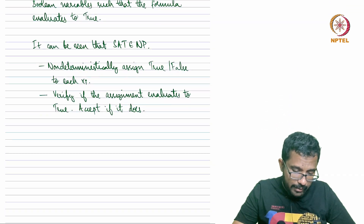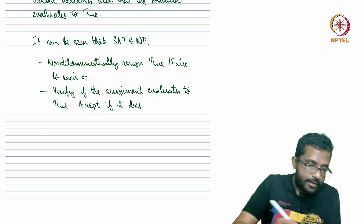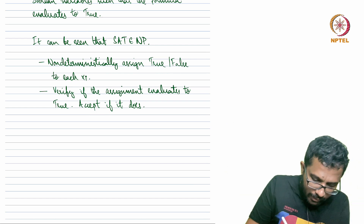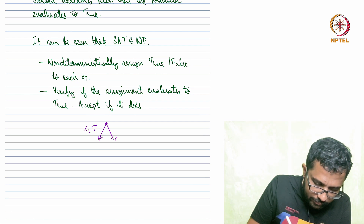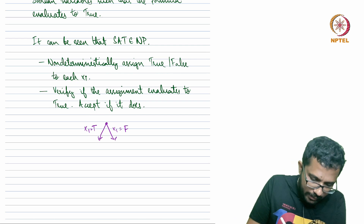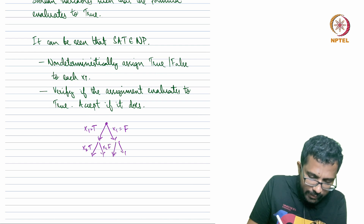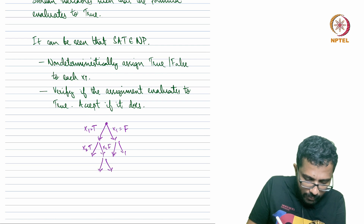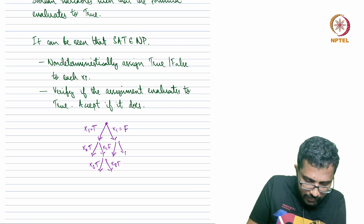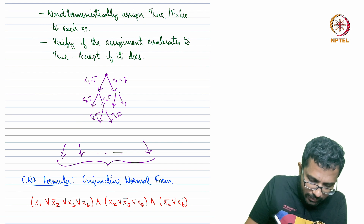It can be verified that SAT is in NP. We can non-deterministically assign x1 to be true or false. Then for each variable we non-deterministically pick true or false, branching further for x2 and x3, ultimately producing 2^n possible computation paths.